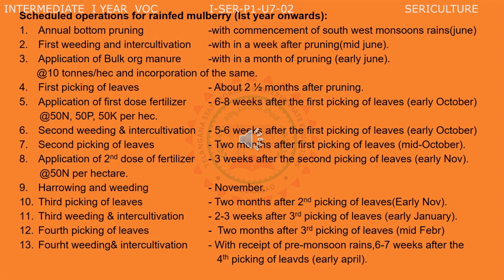Scheduled operations for rainfed mulberry from the first year onwards: First is the annual bottom pruning with the commencement of southwest monsoons in June. The intercultivation operations should be done within a week after pruning, that is mid-June. Application of bulk organic manures at the rate of 10 tons per hectare and incorporation of the same in the soil should be done within a month of pruning, that is early June.